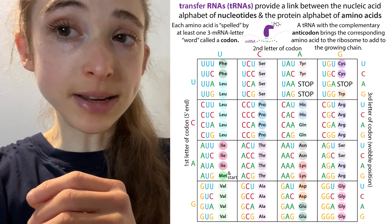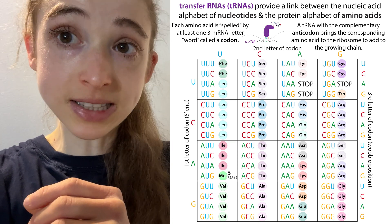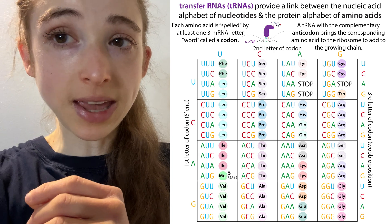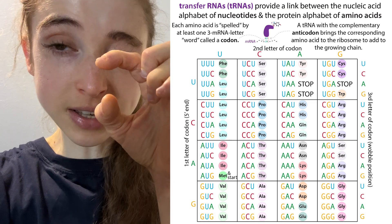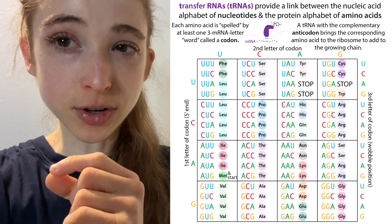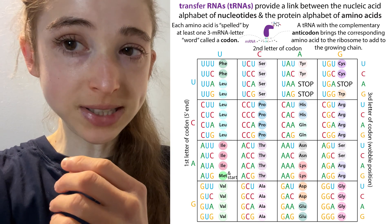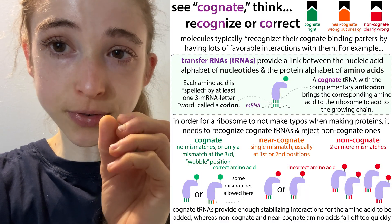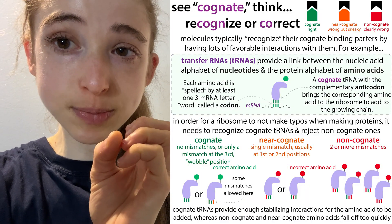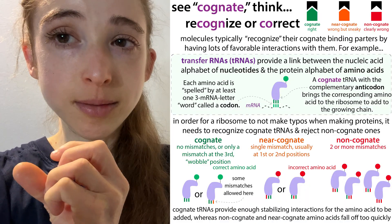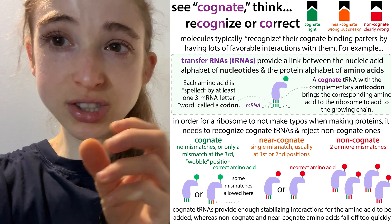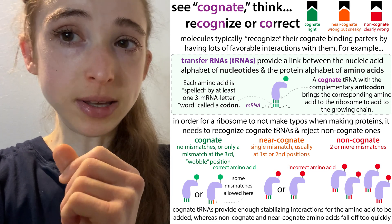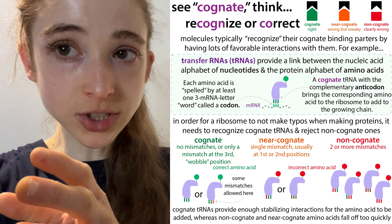The same tRNA will be able to recognize multiple codons even though they have a different letter at that third position, because that's the wobble position. Once you've established matching at those first two binding spots, you don't have to be as discriminating in that third spot. And so that would be your wobble position.